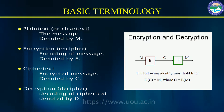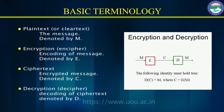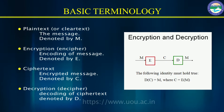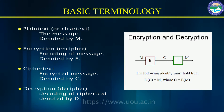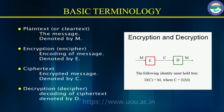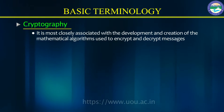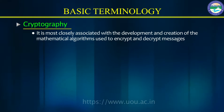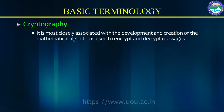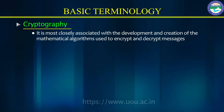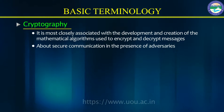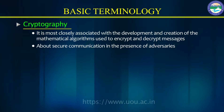Encryption is the encoding of a message and it is denoted by E. Ciphertext is the encrypted message and it is denoted by C. Decryption is the process of decoding of ciphertext and it is denoted by D. Cryptography is most closely associated with the development and creation of mathematical algorithms used to encrypt and decrypt messages. It is about securing the communication in the presence of adversities.